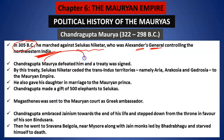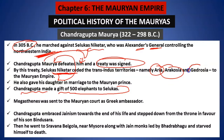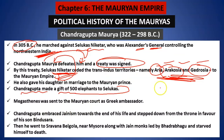In the year 305 BC, he marched against Seleucus Nicator, who was Alexander's general controlling northwestern India. Chandragupta Maurya defeated him, and then a treaty was signed. In this treaty, Seleucus Nicator gave his region to Chandragupta Maurya, and also gave his daughter to him. Chandragupta Maurya in return gave a gift of 500 elephants. There were four territories in the trans-Indus region — Arachosia, Gedrosia, among others — which became part of the Mauryan Empire.